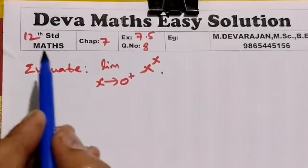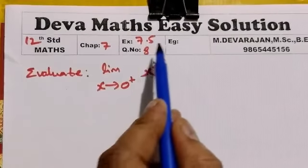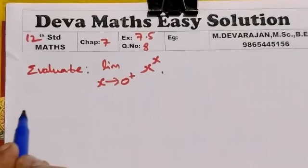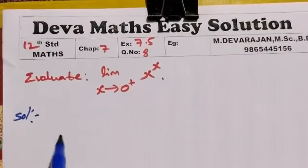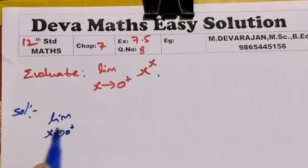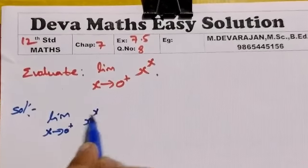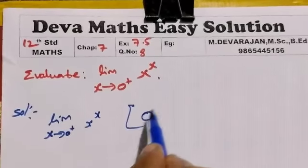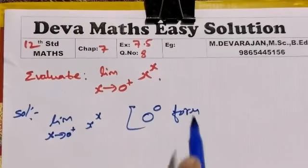Hi students, this is Devan. Now you are going to see Chapter 7 Exercise 3, Question 8. Evaluate limit as x approaches 0 plus of x power x. Solution: Given limit x approaches 0 plus x power x. By applying the limit, we get 0 power 0 form, an indeterminate form, so we will use a technique.